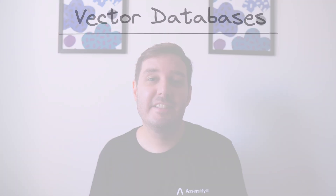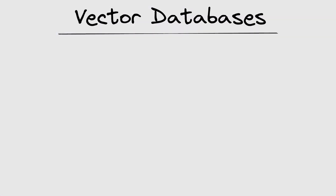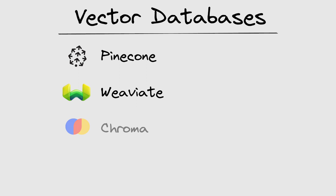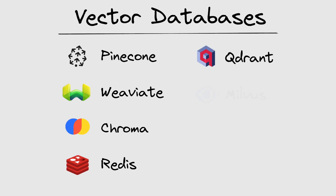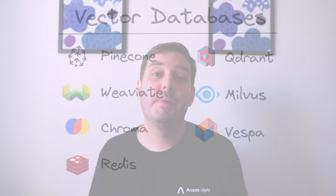Now that you know some use cases, let's go over some options you can use as a vector database. There are a number of vector databases available — for example, Pinecone, Weaviate, Chroma, Redis also has a vector database, Qdrant, Milvus, or Vespa AI. I won't go into details here, but if you want to see a separate video with an in-depth comparison, then let me know in the comments below.